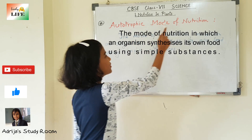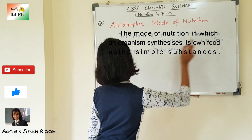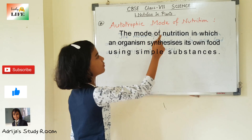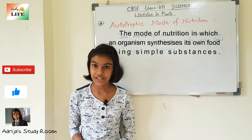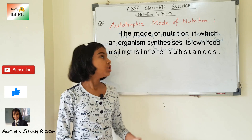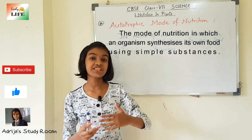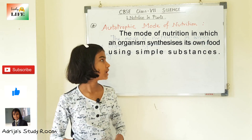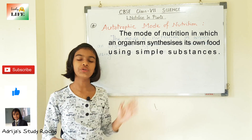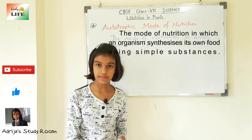The definition of autotrophic mode of nutrition is: the mode of nutrition in which an organism synthesizes its own food using simple substances is known as autotrophic mode of nutrition. For example, green plants make their own food using raw materials like carbon dioxide, sunlight, water, and minerals. The organisms that exhibit autotrophic mode of nutrition are known as autotrophs, and they are also called producers as they produce their own food by the process of photosynthesis.